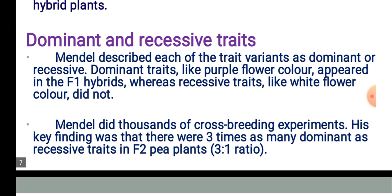We will see that in the next slide using schematic representations. Here again, two key points: dominant and recessive traits. Mendel described each trait variant as dominant or recessive. Dominant traits — like purple flower color — appeared in F1 hybrids, whereas recessive traits — like white flower color — did not. The trait which is expressed in F1 generation is dominant; the trait which is not expressed is called recessive.